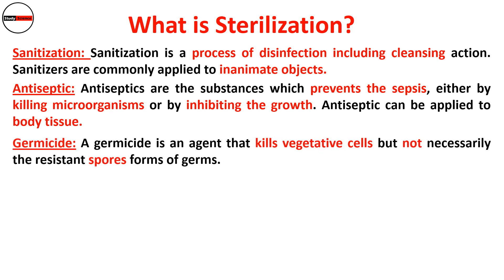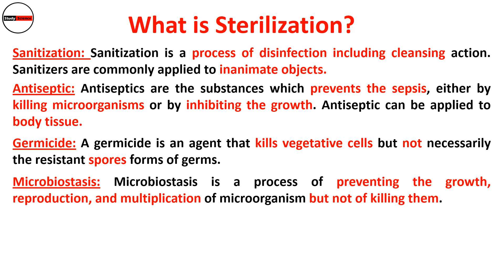The next term is germicide. A germicide is an agent that kills vegetative cells but not necessarily the resistant spore form of germs. The next term is microbiostasis. Microbiostasis is a process of preventing the growth, reproduction, and multiplication of microorganisms, but not of killing them.